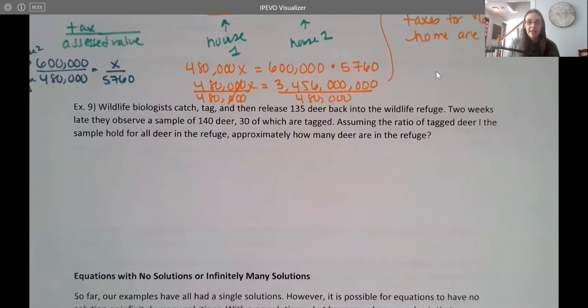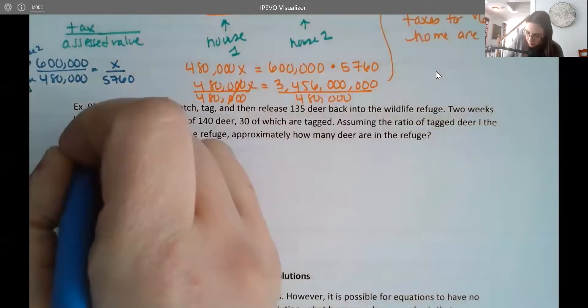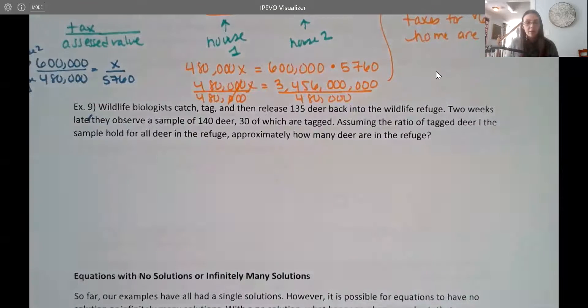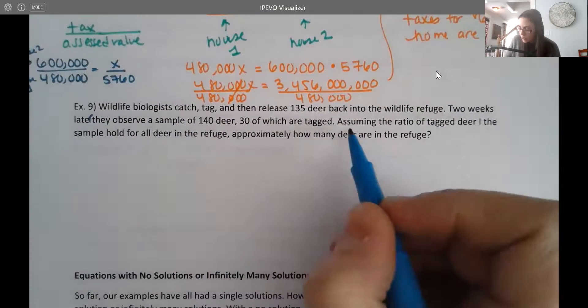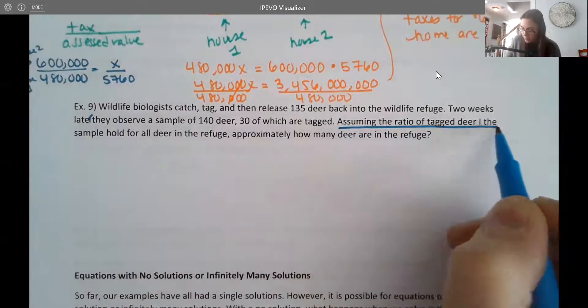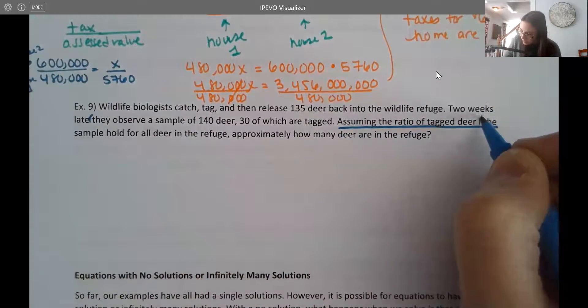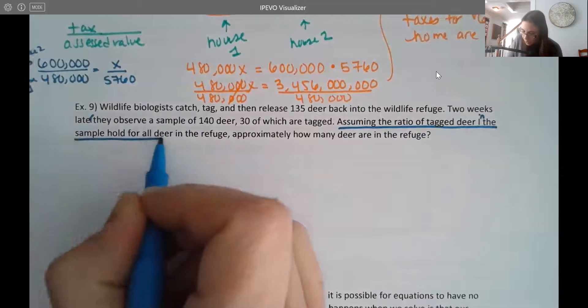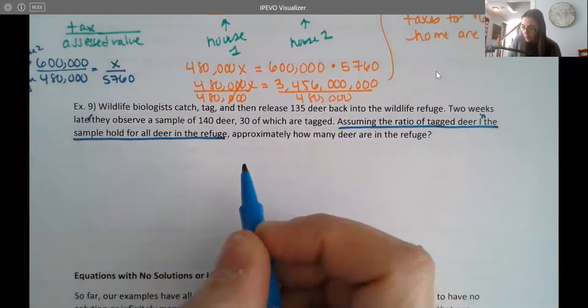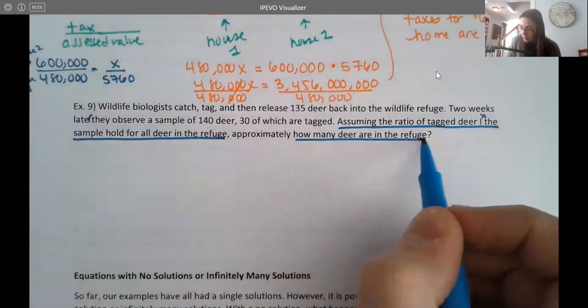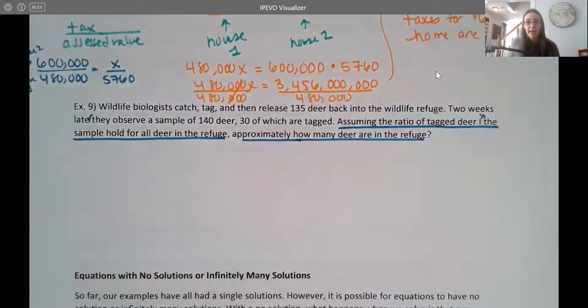Let's try another one. Wildlife biologists catch, tag, and then release 135 deer back into the wildlife refuge. Two weeks later, they observe a sample of 140 deer, 30 of which are tagged. Assume the ratio of tagged deer in the sample holds for all deer in the refuge. And then we're trying to figure out how many deer are in the refuge.